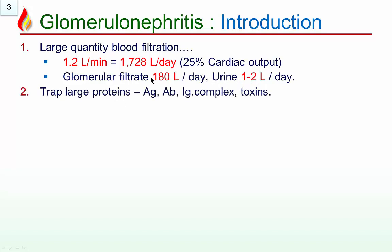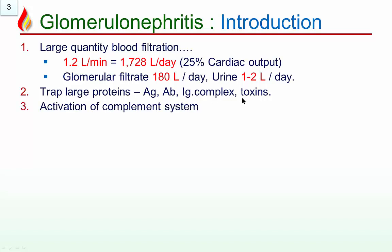Because of its filtration capacity, the glomerulus traps large proteins, particularly antigens, antibodies, immune complexes, and toxins. So glomerular injury is common, also due to drugs.